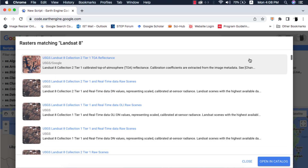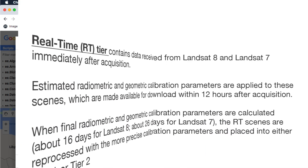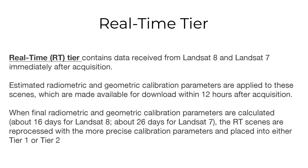I will start with the real-time tier. Derived from raw scenes, the real-time tier contains data received from Landsat 8 and Landsat 7 immediately after acquisition. The important feature of this tier to remember is that estimated radiometric and geometric calibration parameters are applied to the raw scenes, which are made available for download within 12 hours after acquisition.